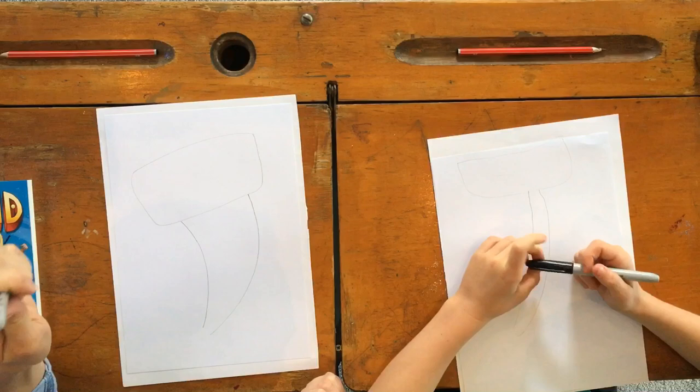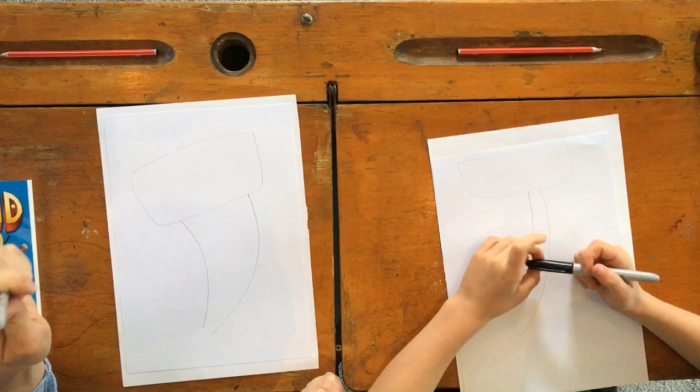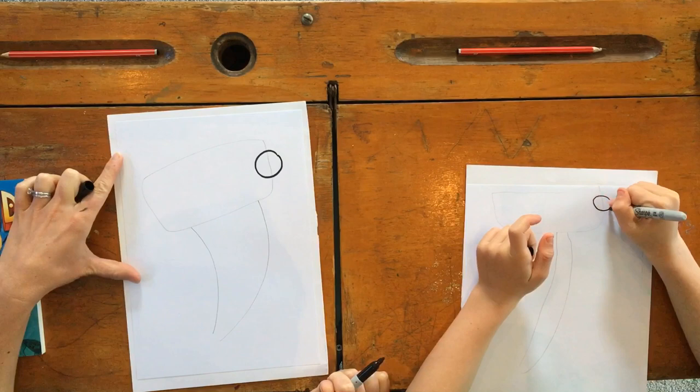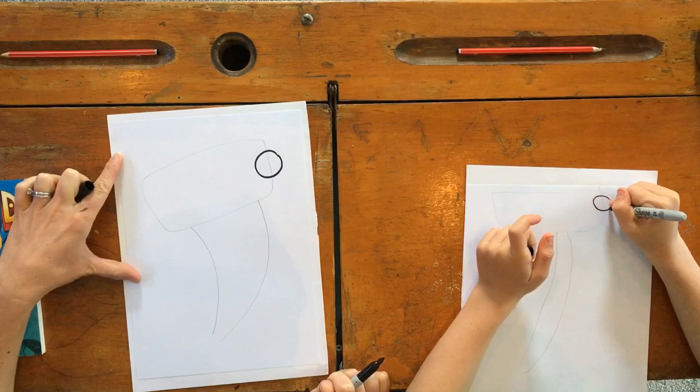Okay, now we are going to grab our permanent markers. I like when we do this activity, everybody's shark ends up looking different. Okay, so let's put the eyes in. We're just going to do a circle at the end of our rectangle. Great.